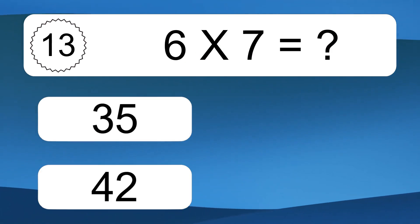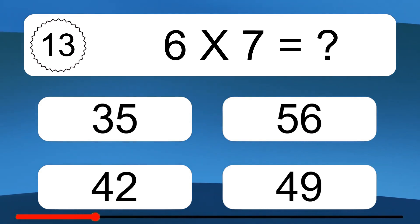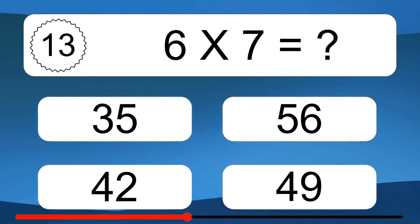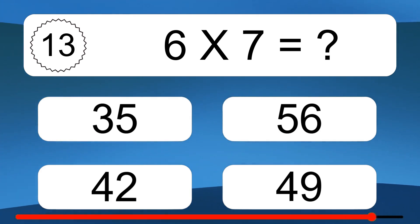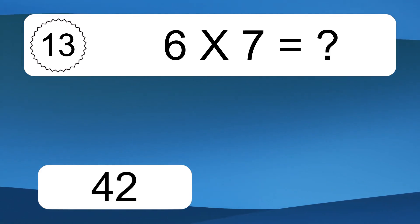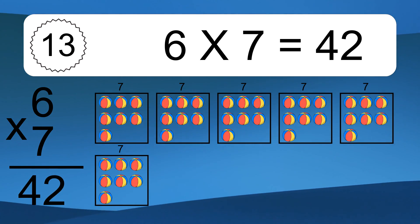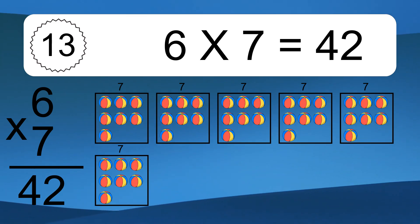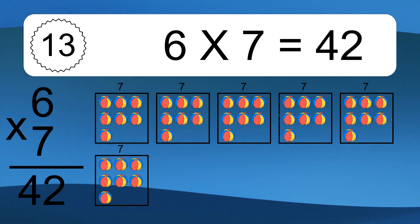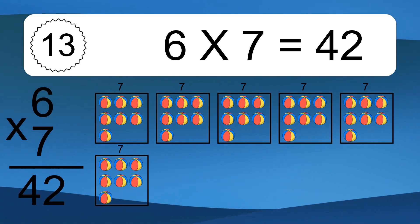6 times 7 equals what? We have 6 boxes, and each box has 7 colorful balls inside. 6 times 7 equals 42.